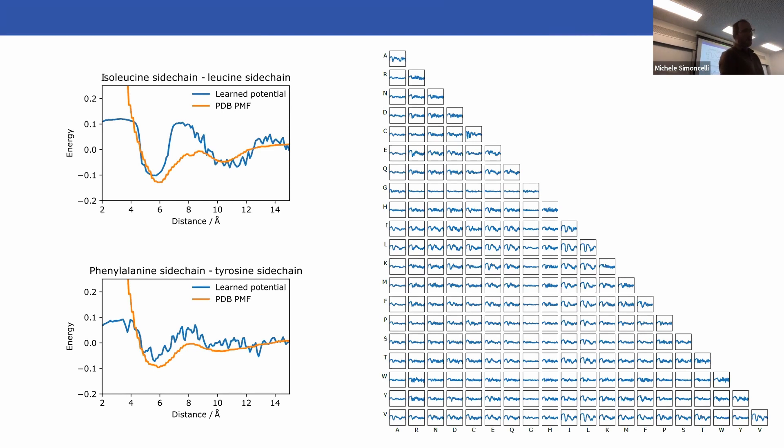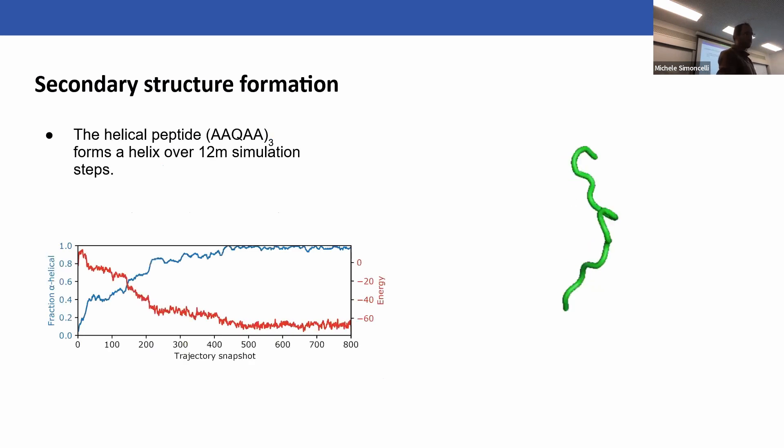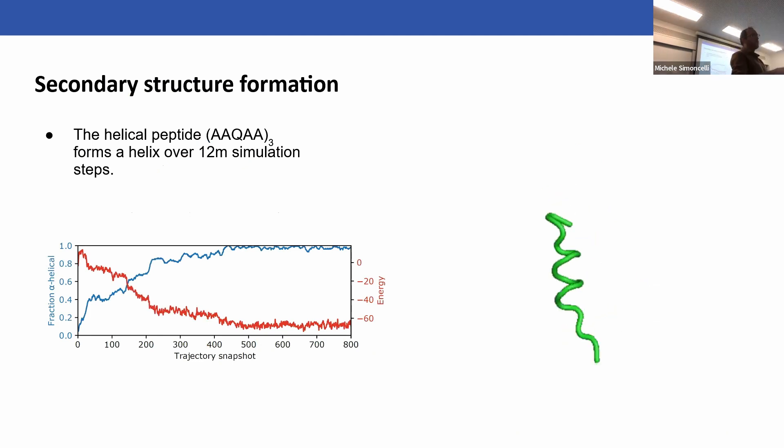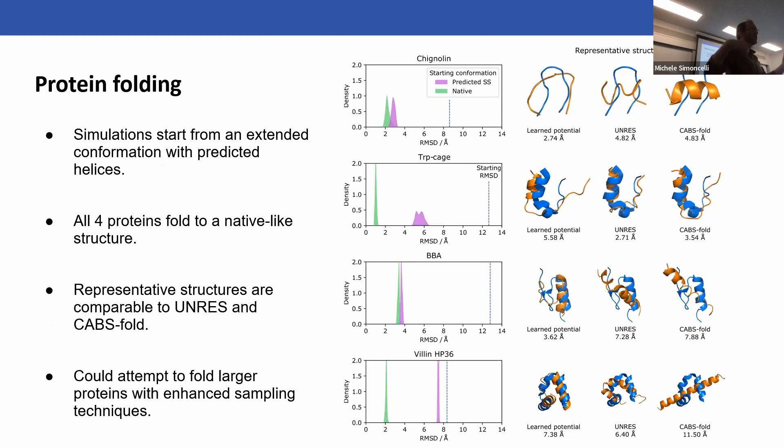When you run this learned potential forward in inference mode, you see it can fold a helical peptide over a few million steps, which is what you expect. Looking further at protein folding, you can start some small standard proteins from extended conformations with helices where there are predicted helices, just to speed up the simulation. We find that our set of proteins fold to a native-like structure, and the representative structures you get are comparable in accuracy to UNRES and CABS-fold, which are two existing coarse-grained folding methods.